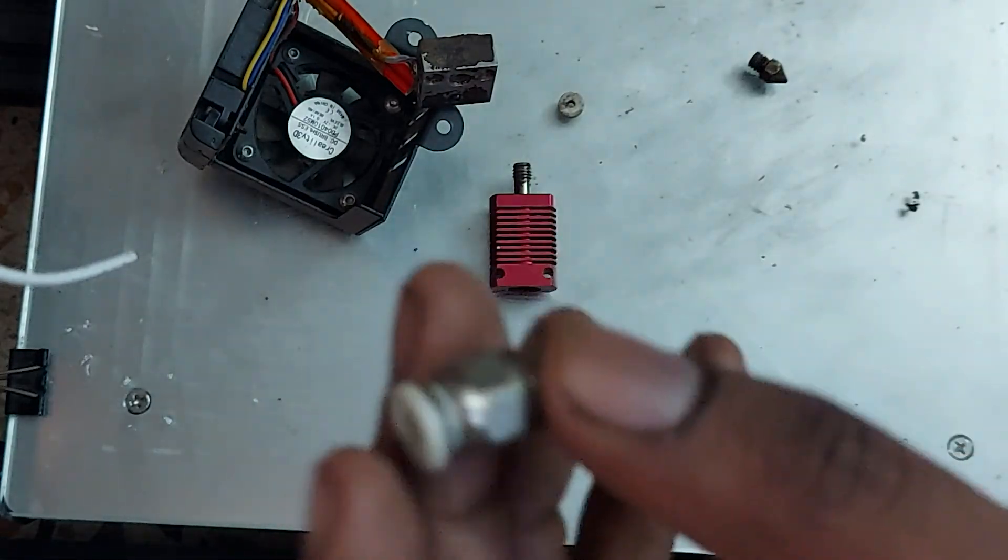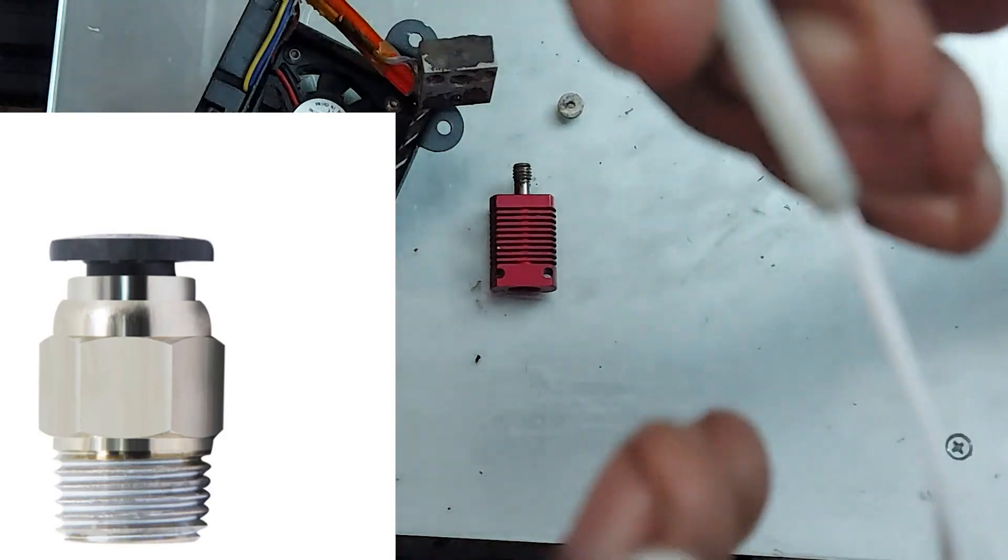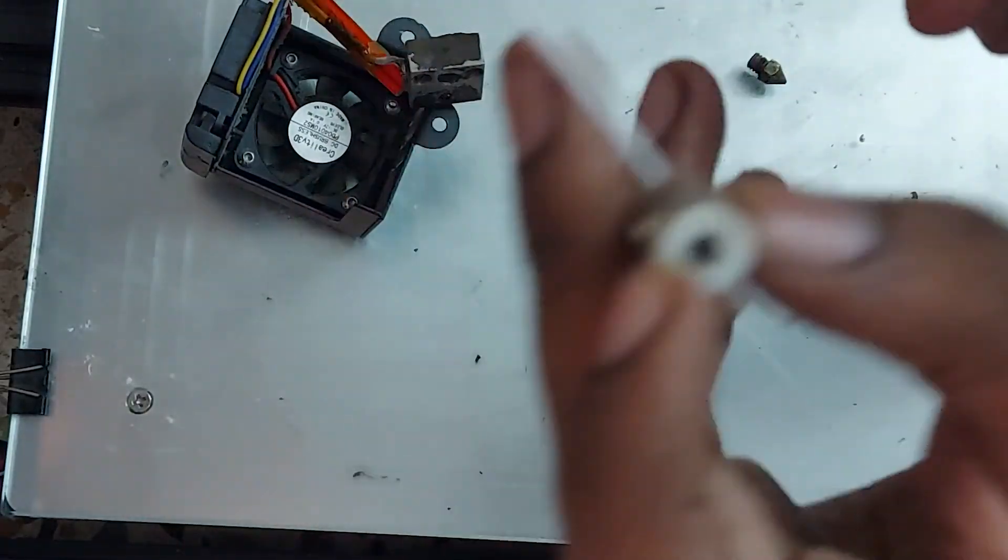And this is V6 connector - it helps to connect the Teflon tube with the heat shrink.